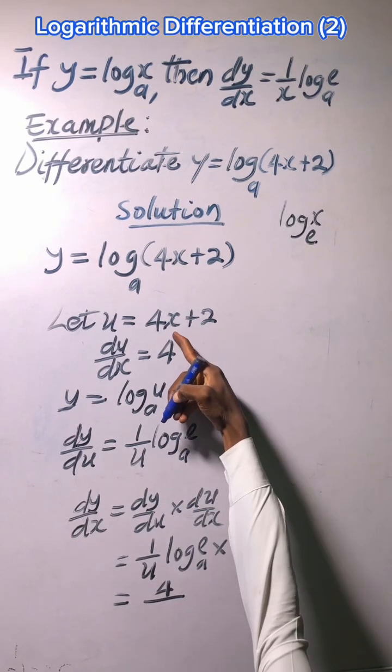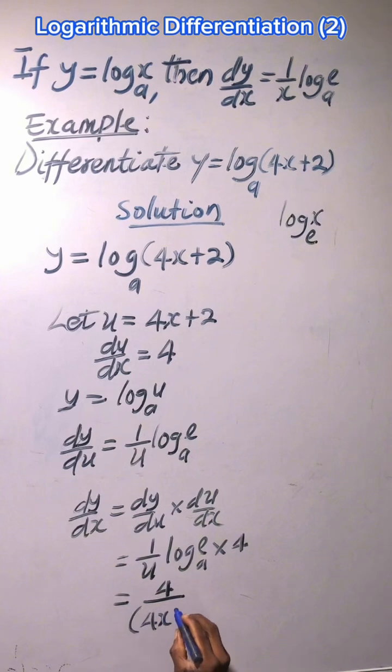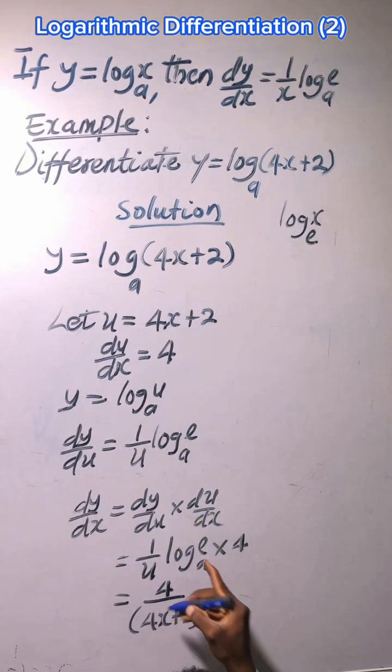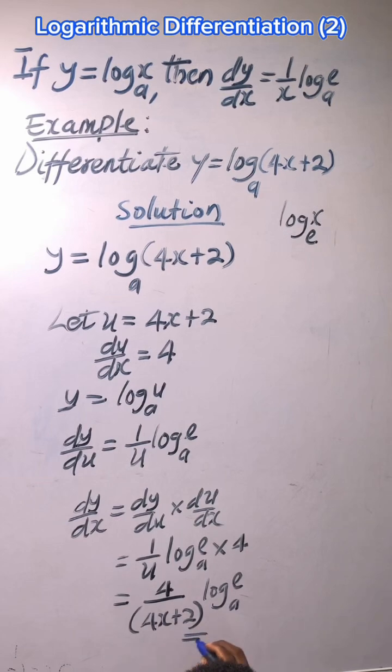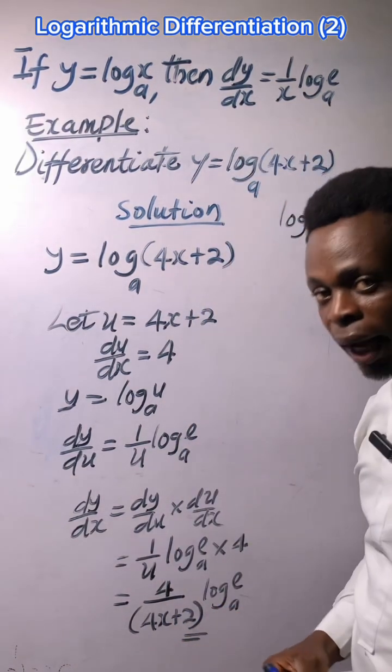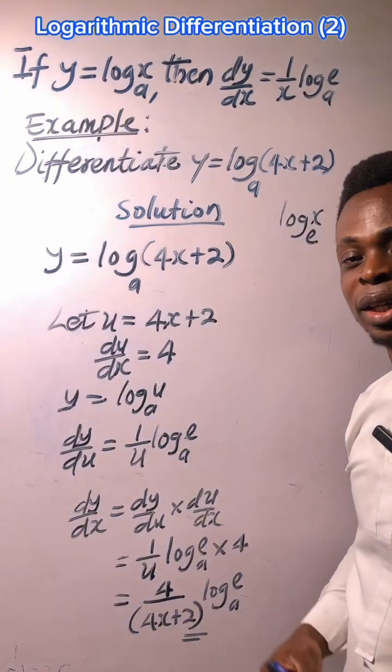In place of u we are going to write this. Let's equal to this, so (4x + 2) then log e in base a, and that becomes the answer. Please like, comment, and share this video.